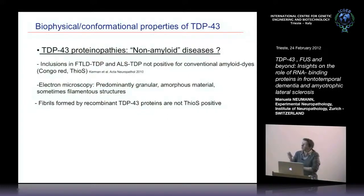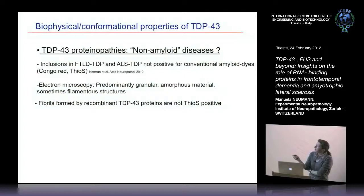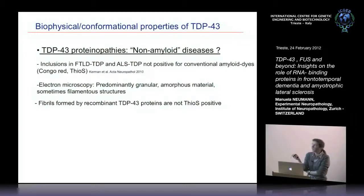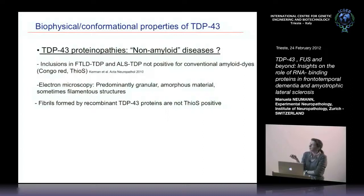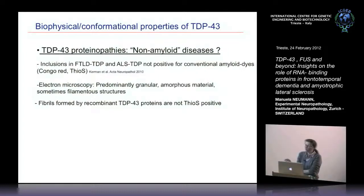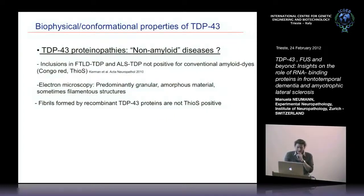The first project we are working on is to gain insights into the biophysical and conformational properties of TDP-43. TDP diseases are still thought to be non-amyloid diseases because inclusions are not positive for conventional amyloid dyes like Congo red or thioflavin, and on electron microscopy the inclusions are predominantly granular or amorphous. Recombinant TDP fibrils are also not positive for thioflavin S, so we lacked a good tool to study its conformational properties.